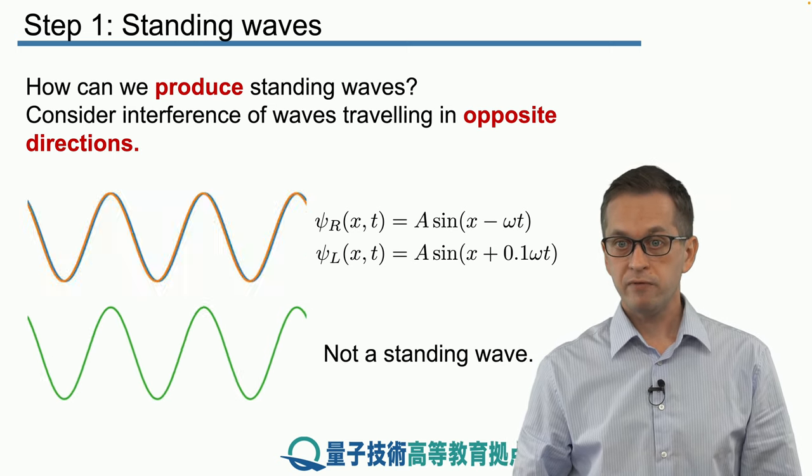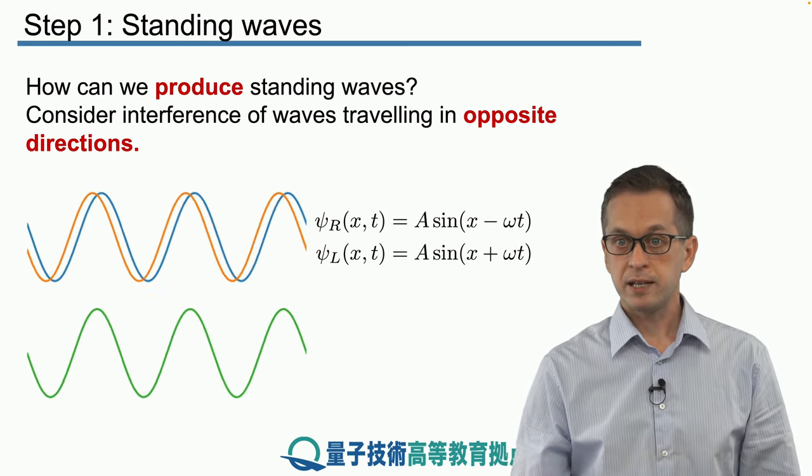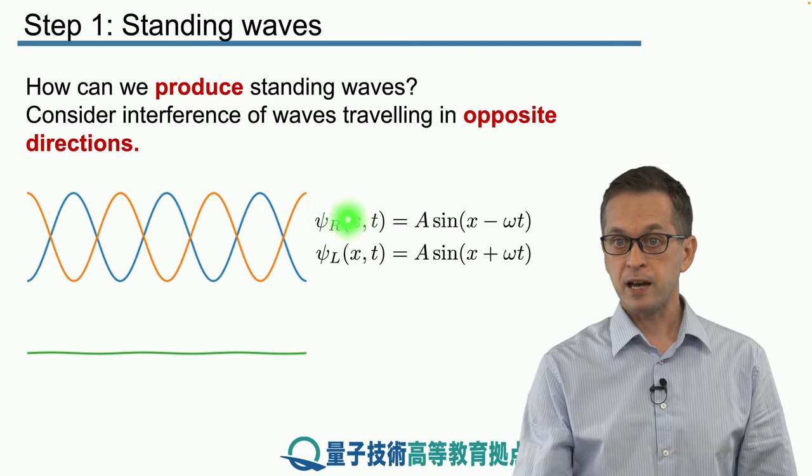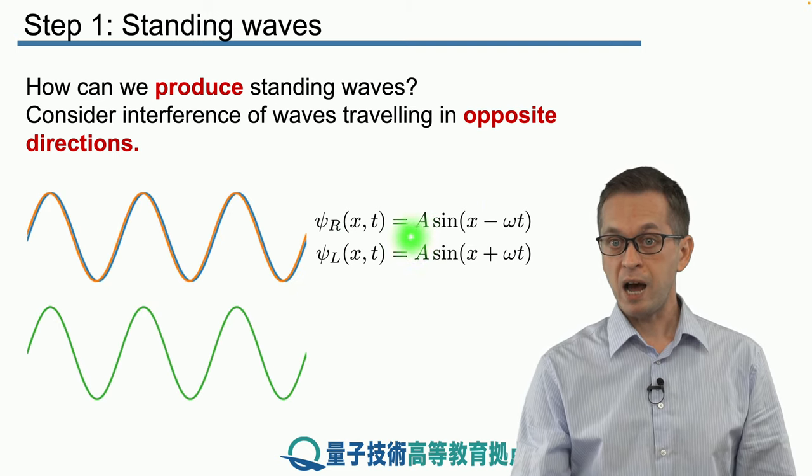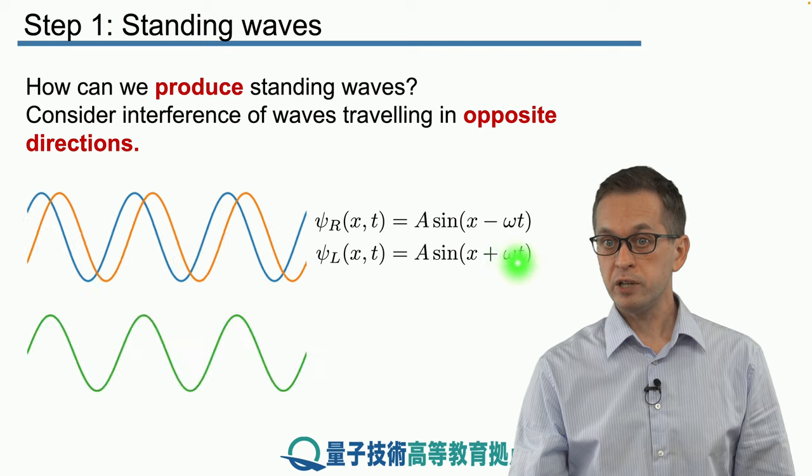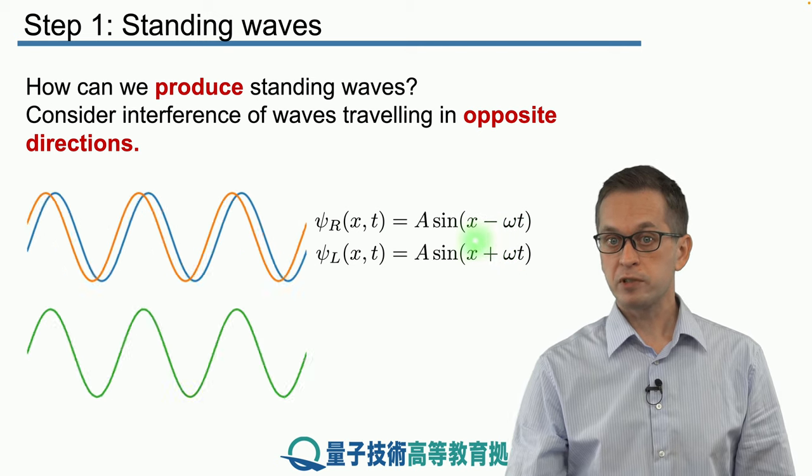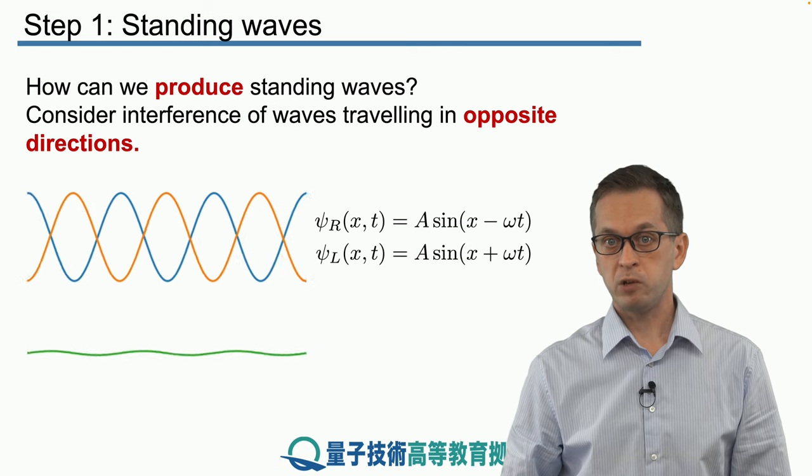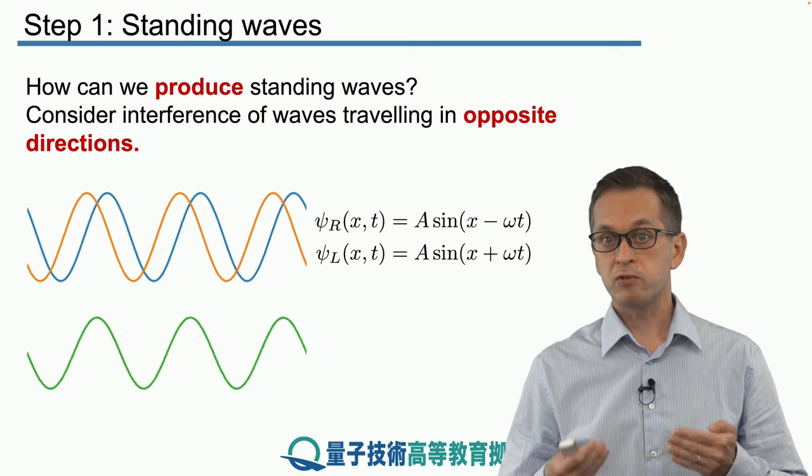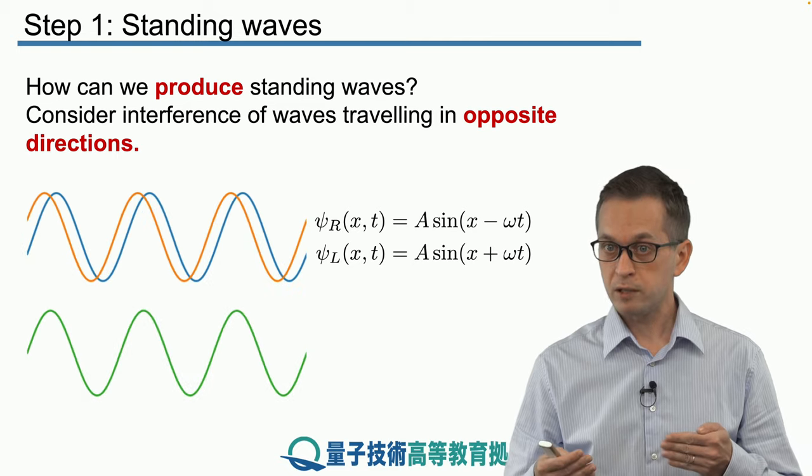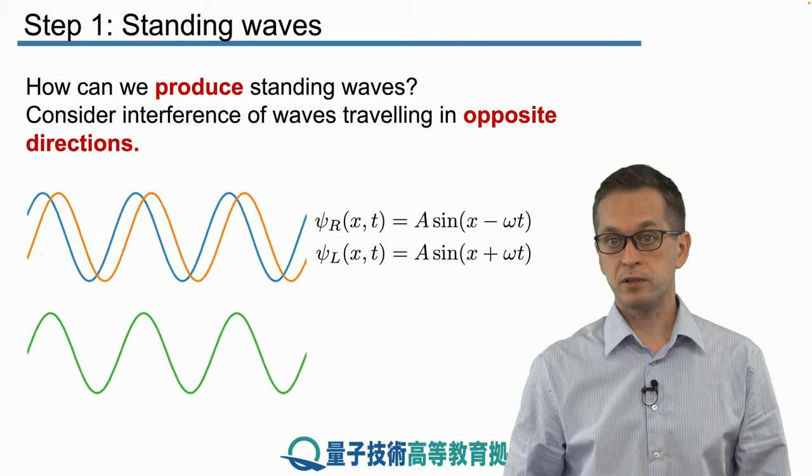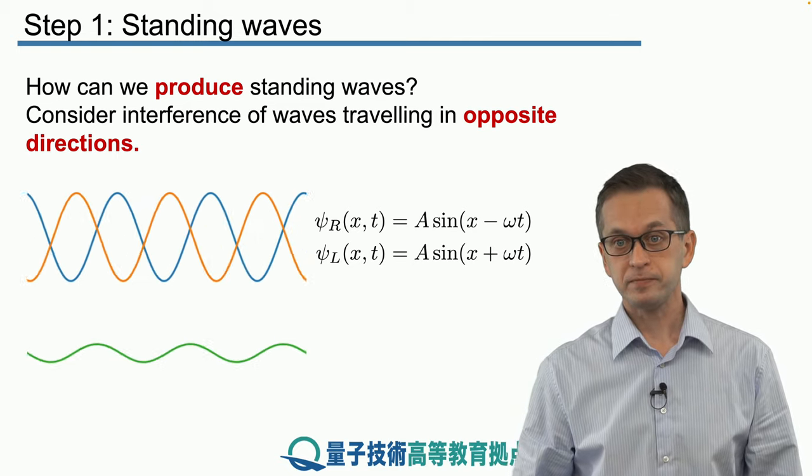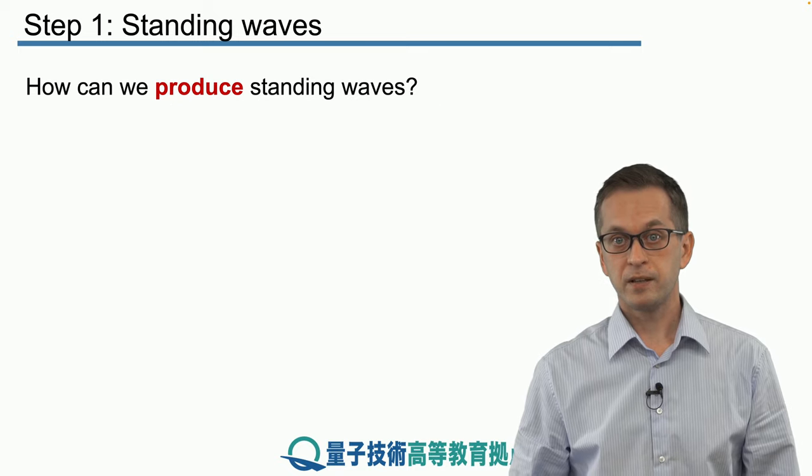However, if we actually set the waves to be identical in terms of their amplitude and in terms of their frequencies, only travelling in opposite directions, then you can see that we are producing the standing wave. So standing wave is a result of two interfering waves, two identical waves which are travelling in opposite directions.